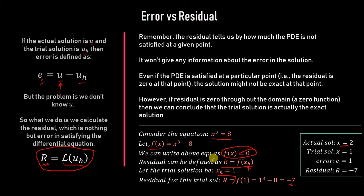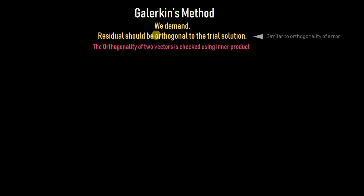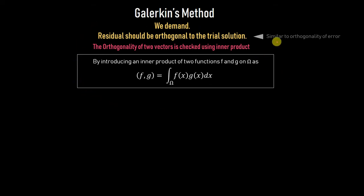That is the basic difference between error and residual. In Galerkin's method, the condition we use is that the error should be orthogonal to the trial space — but since we can't compute the error directly, the slight change is that the residual should be orthogonal to the trial solution space. The residual is what we can calculate, and it tells us in some sense how far we are from the actual solution.